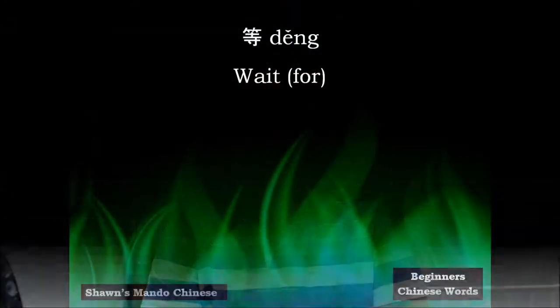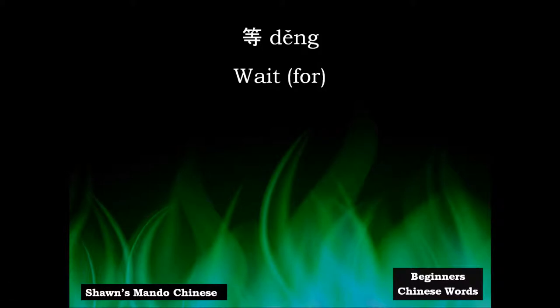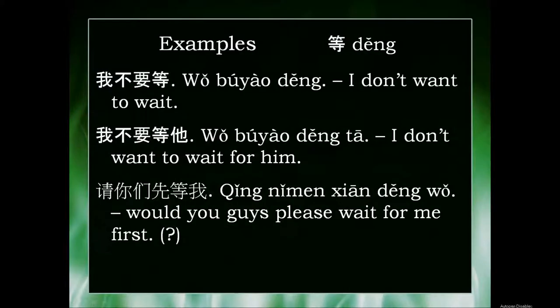Hi guys, this brief video is about the basic Chinese word 等, pronounced in the third tone. When pronounced quickly it's děng, which means to wait or to wait for. Here are some examples of how to use 等 in everyday speech.